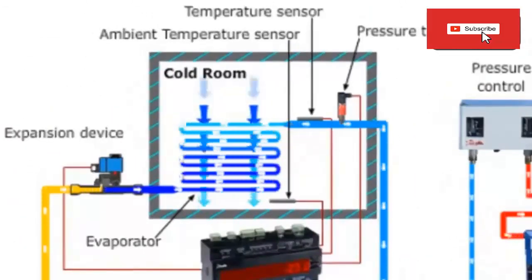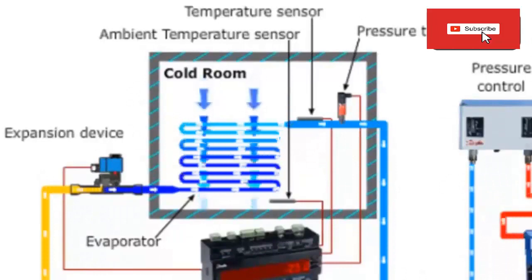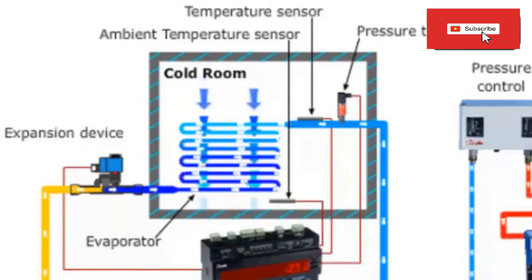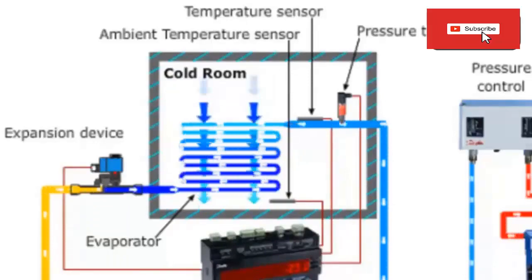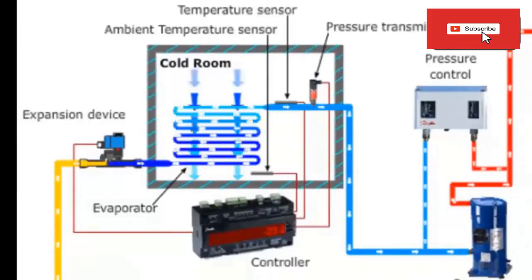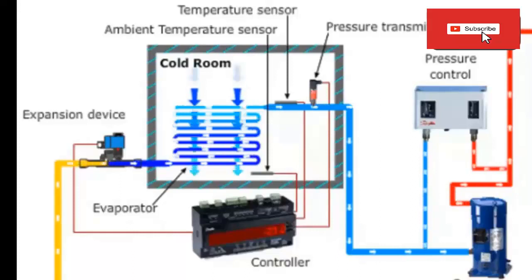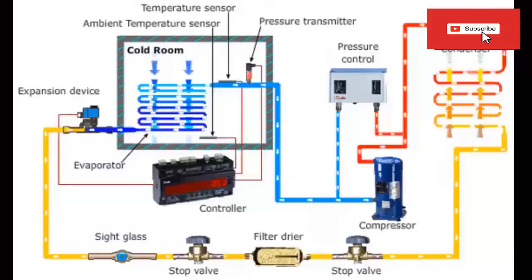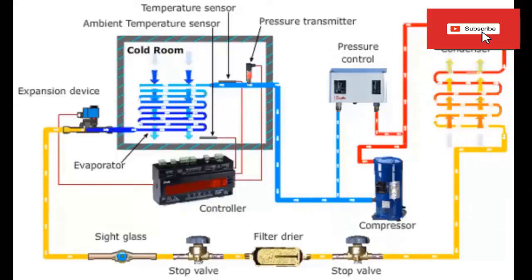The evaporator temperature sensor informs the room controller of the exact temperature of the evaporator. This sensor has an internal electrical resistance which changes its value when the temperature varies. The variation of the electrical resistance brings a change of voltage that the controller uses to know the temperature. The temperature sensor inside the cold room informs the controller of the internal temperature, through the variation of its electrical resistance with the temperature.